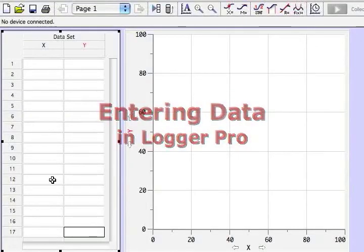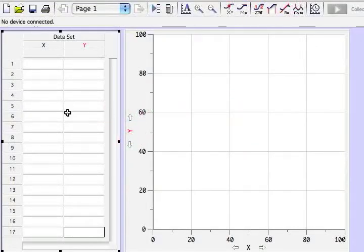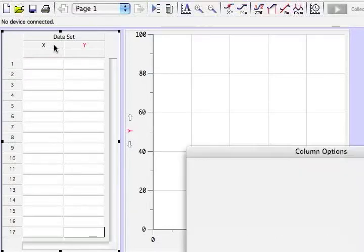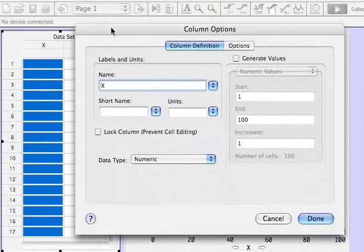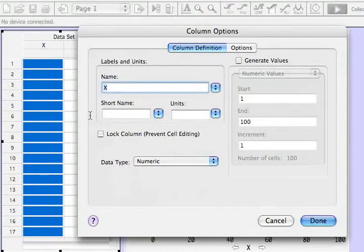We're going to use Logger Pro to enter and analyze our data. We'll begin with this data table and start by changing the names of the columns. I'll double-click to edit the column, which brings the Column Options dialog. Let's give it a more meaningful name. Instead of X, let's call it Length. We'll give it a short name of L and its units are centimeters.